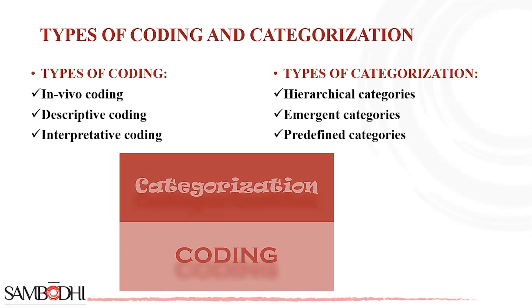Descriptive coding involves creating labels that summarize the content of the data without any interpretation. It is a first cycle method of coding that involves reading through qualitative data and coding passages according to their topic. Descriptive codes are often in the form of a noun and summarize the topic of the data. Tagging and using hashtags in social media is a widely used version of descriptive coding. Descriptive codes identify topics but don't derive further meaning from the data. The result of descriptive coding is a categorized inventory or index of data organized by topic.